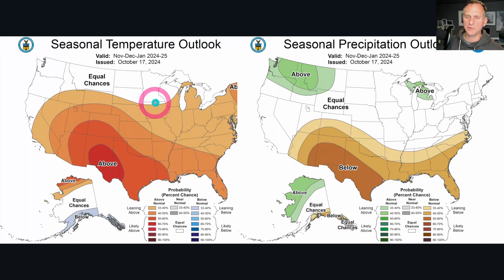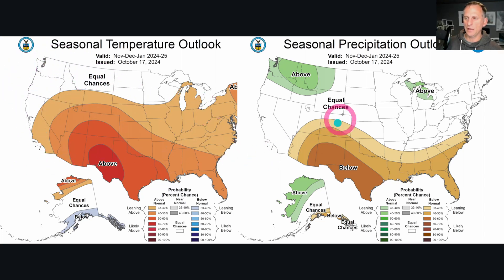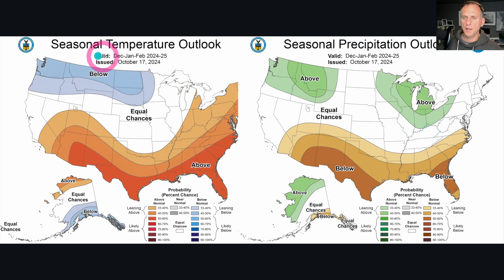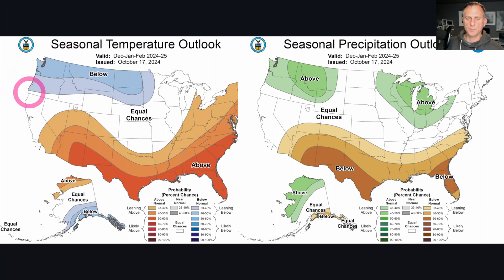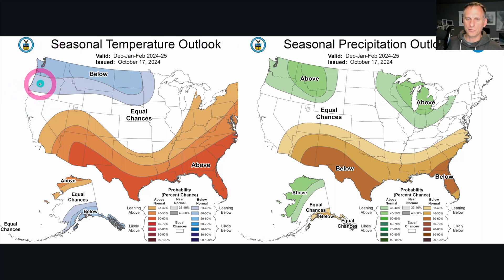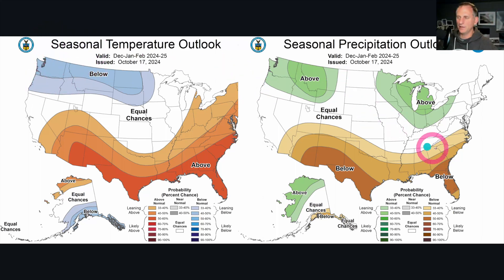Now for what everybody wants to know — the seasonal temperature outlook for November-December-January shows equal chances for the Pacific Northwest, some above-average temperatures across the Southwest USA, and above-average precipitation. Looking at December-January-February, there's a below-normal temperature signature, no doubt due to La Niña conditions expected across the Pacific. An above-average precipitation signal is there as well, so it's not a bad bet to hedge towards a snowier mountains season, especially across the Rockies, BC, Alberta, and the Cascades — typically favored in La Niña years.